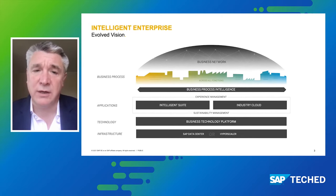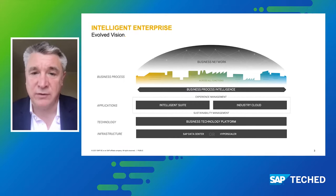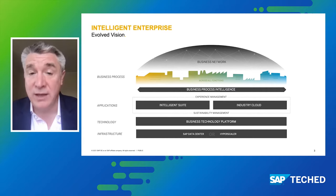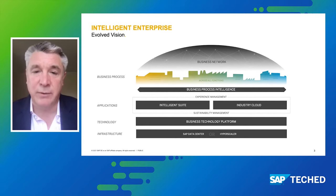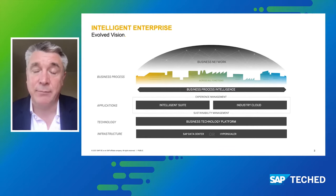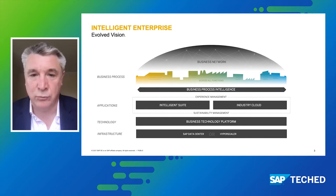Firstly, I just want to look at how important process automation is within our intelligent enterprise vision. Process automation is critical to executing those end-to-end processes to become an intelligent enterprise. That's how we can extend processes within the different applications, but also across the applications as well — executing end-to-end processes in-app and side-by-side, leveraging the power of our process automation tools.